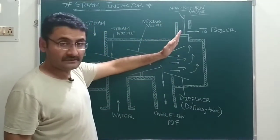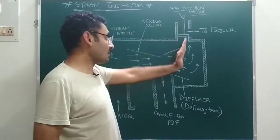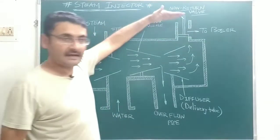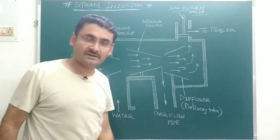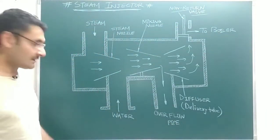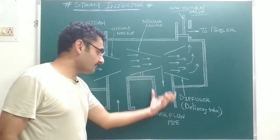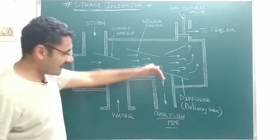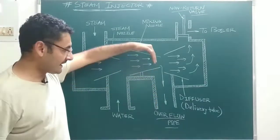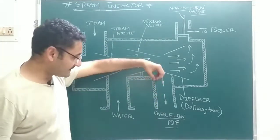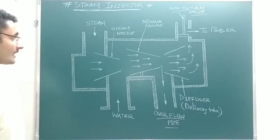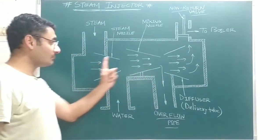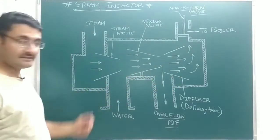The outlet is connected with a non-return valve, which opens only when the water pressure is sufficiently high — at that point it lifts upward and allows high-pressurized water to be supplied to the boiler. The steam injector also has an overflow pipe, through which any extra amount of water is removed.